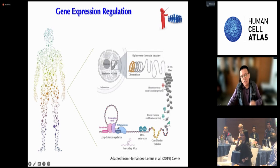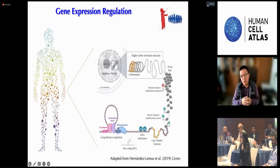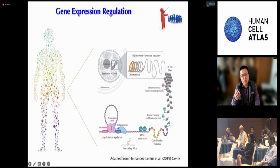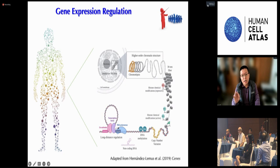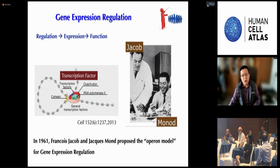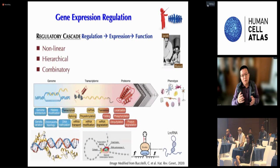Humans are essentially an assembly of trillions of cells. Most of those cells share a common genome, but have different expression and different phenotypes. Gene expression is a highly regulated process, which involves multiple genetic and epigenetic regulatory layers and sophisticated interactions between those layers. Since the discovery of transcription factors 60 years ago, we now know that gene expression is a nonlinear, hierarchical, and combinatorial process.